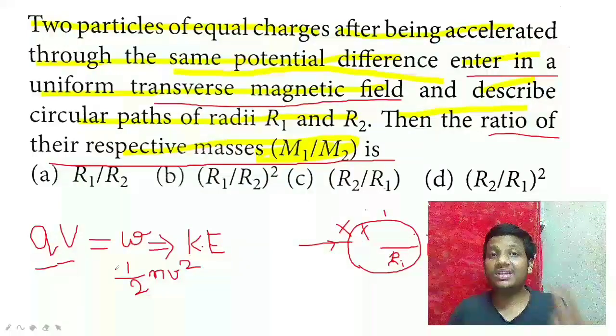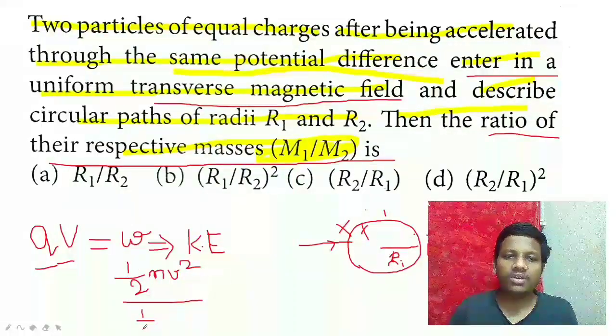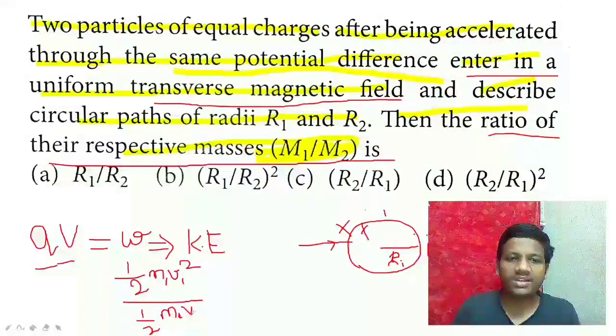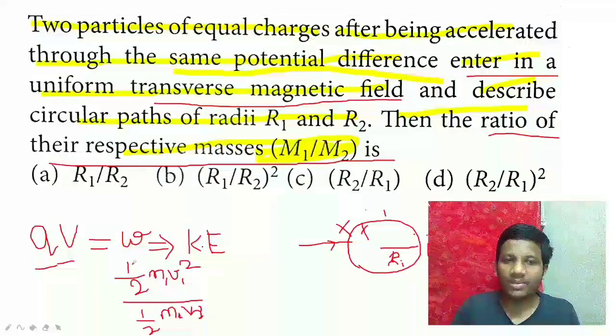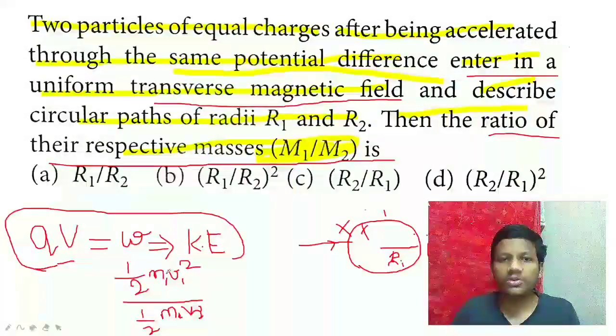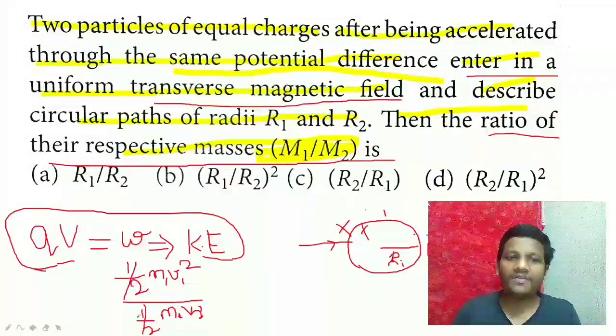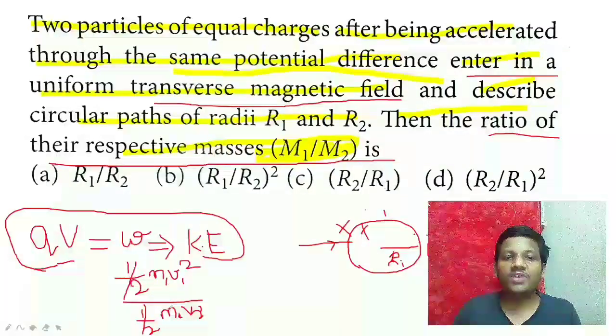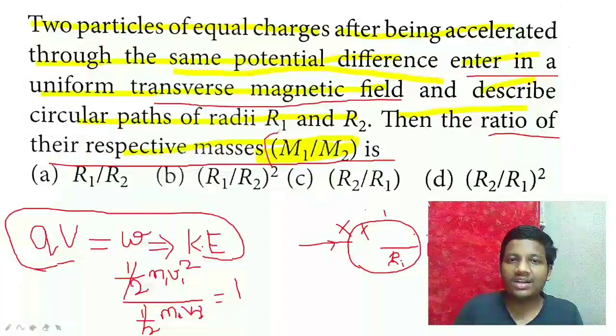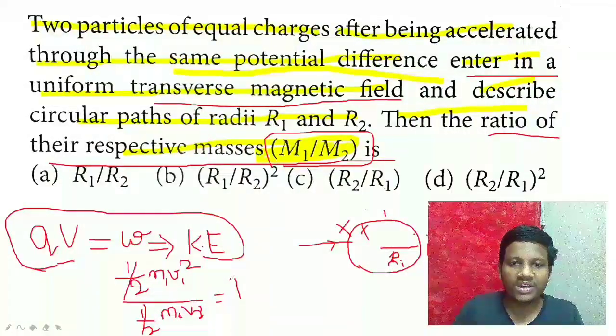For both particles, the kinetic energy is the same. So kinetic energy of particle one equals kinetic energy of particle two: half M1V1 squared equals half M2V2 squared. Our job is to simplify this. Half cancels, so M1V1 squared by M2V2 squared equals one.